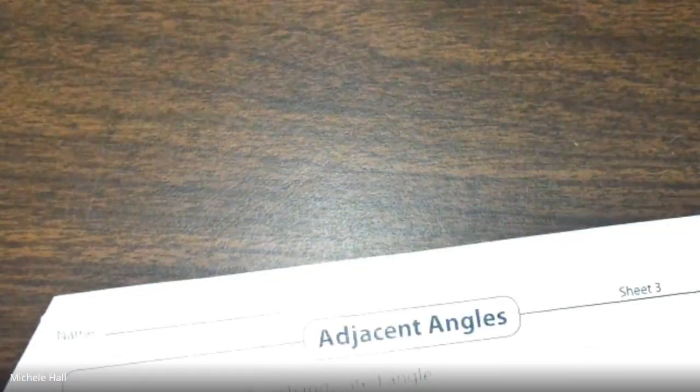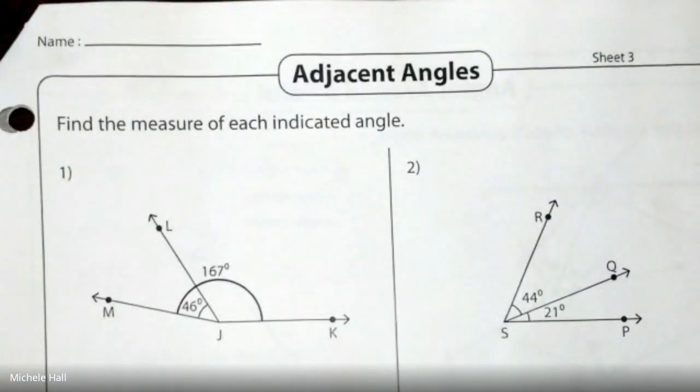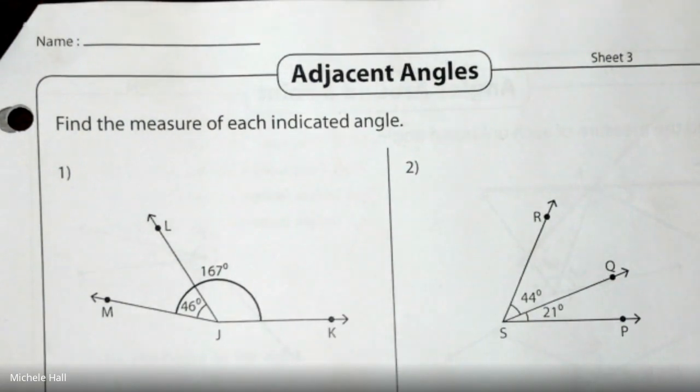Okay, we're just reviewing. We're not doing all of them. Let's go to the next page. Adjacent angles. What does adjacent mean? Next to. They are next to each other.